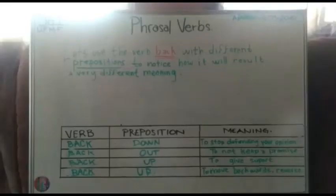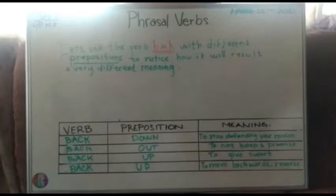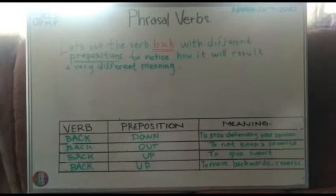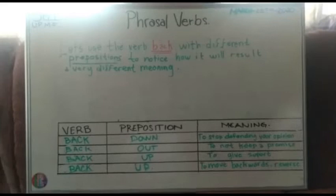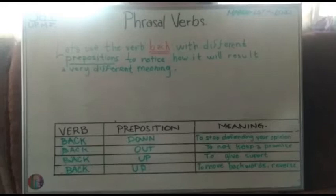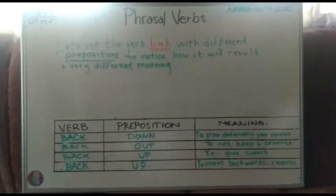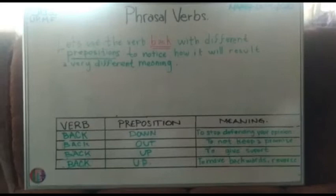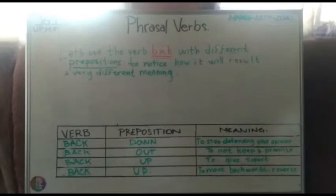Now, as an example, let's use the verb 'back' with different prepositions. Notice how it results in a very different meaning. We are using the prepositions 'down,' 'up,' and 'out' — pretty different, but using the same verb 'back.' So: 'back down' means to stop defending your opinion; 'back out' means to not keep a promise; 'back up' means to give support; and 'back up' can also mean to move backwards or reverse. As we can see, just changing the preposition can completely change the meaning.